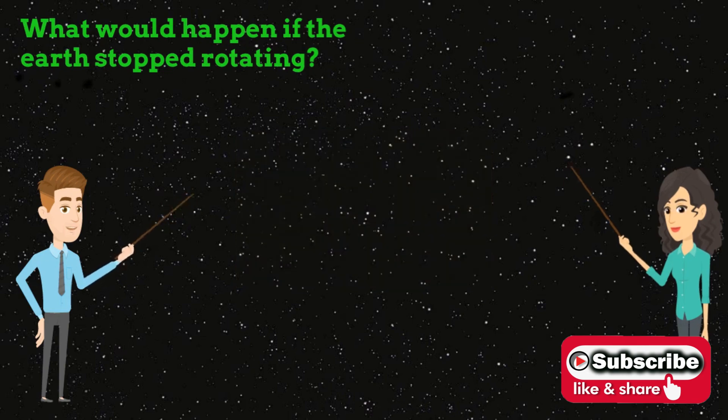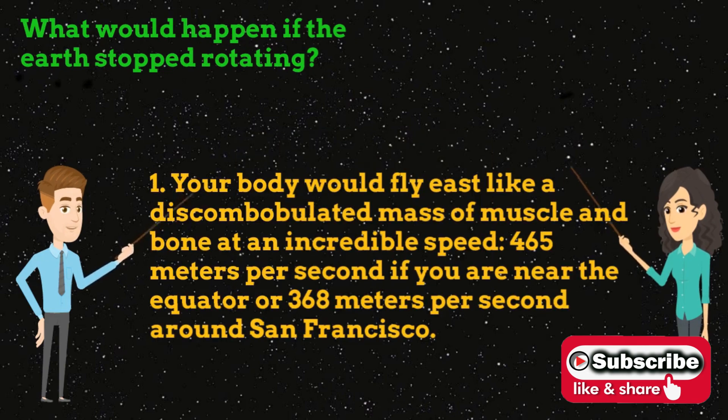Here's what would happen if the Earth stops spinning. Number 1: Your body would fly east like a discombobulated mass of muscle and bone at an incredible speed—465 meters per second if you are near the equator or 368 meters per second around San Francisco.